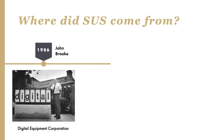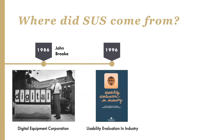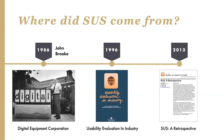Ten years passed until it was published for the first time in the book, The Usability Evaluation in Industry. Over the years, SUS has turned out to be an effective method for both small and large-scale user studies, becoming an industry standard with references in over 13,000 publications. Due to its success, in 2013 John Brook made a retrospective publication in the Journal of Usability Studies reflecting on 27 years of SUS performance.